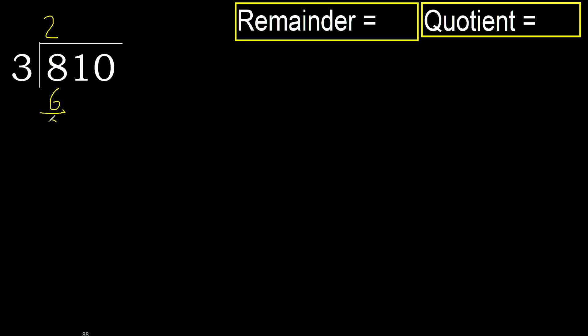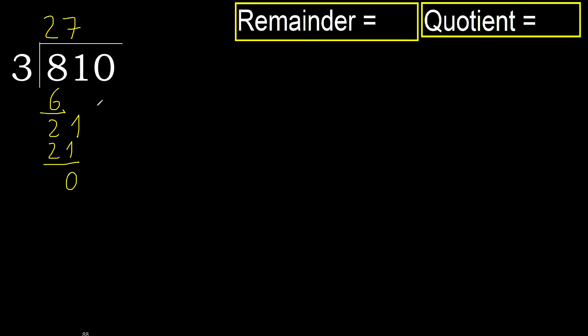Subtract, then bring down the next digit: 21. 3 multiplied by 7 is 21, which is not greater. Subtract.